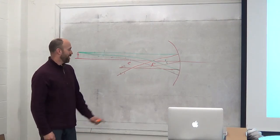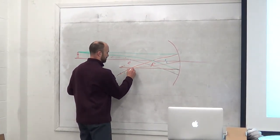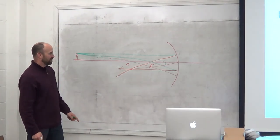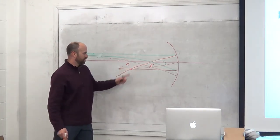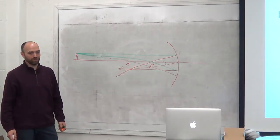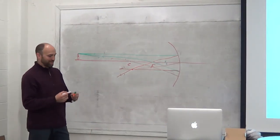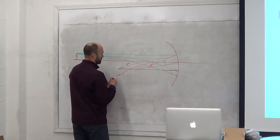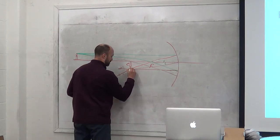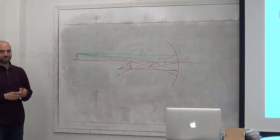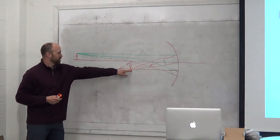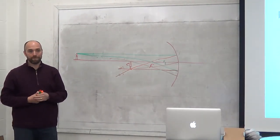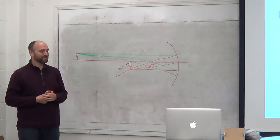Here's the answer: where all of these lines intersect — that's where your image is. See, it all intersected right there. Except for one, which probably didn't because I'm a horrible artist and didn't use a protractor, ruler, or compass — I just eyeballed the whole thing. If I had used my protractor, ruler, and compass, I would have gotten all of them to intersect at the same point, and I would now have an image right there. Since all of this originated from the top of my candle, that's where the top of the image would be. That's how to do ray tracing for a mirror.